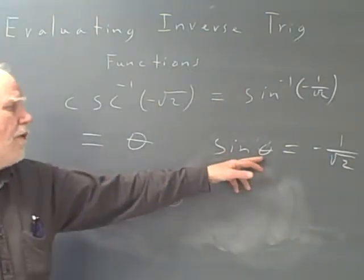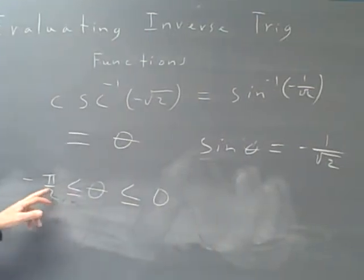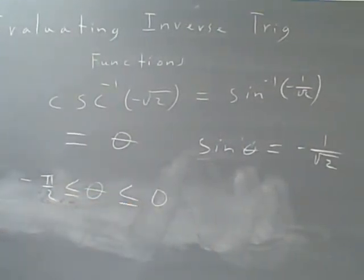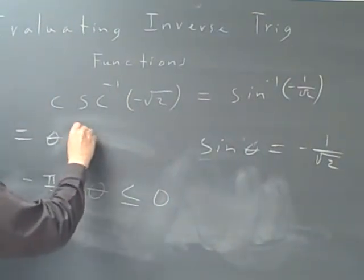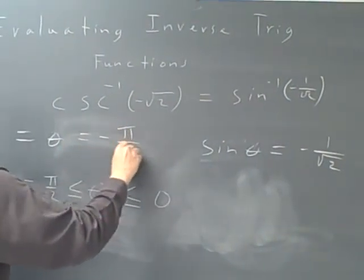You know that's pi over 4, and you know it's between negative pi over 2 and 0, so the answer is negative pi over 4. And I'll move this back a little bit, equals theta, which equals negative pi over 4.